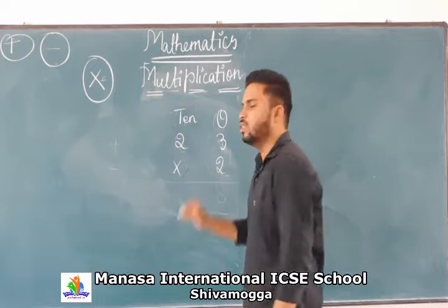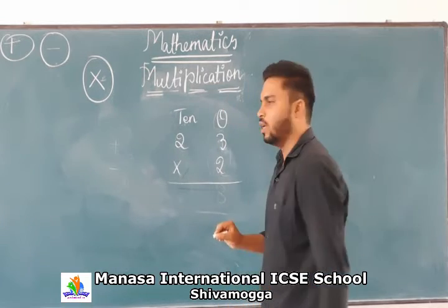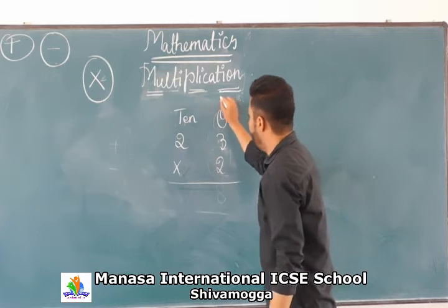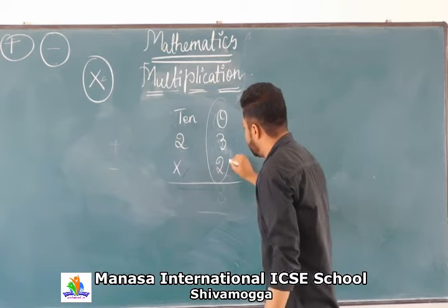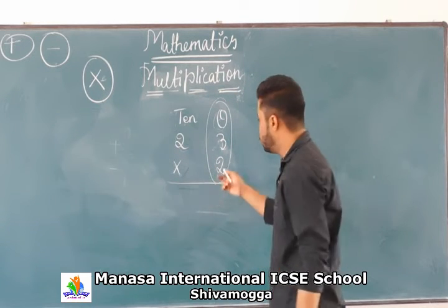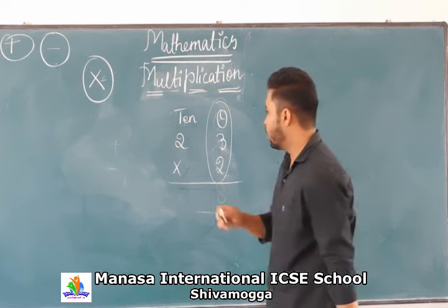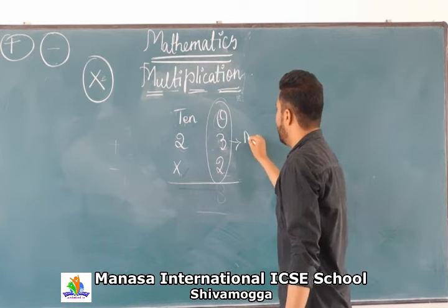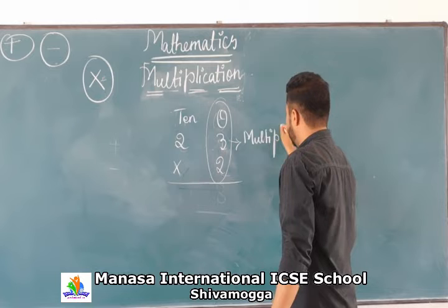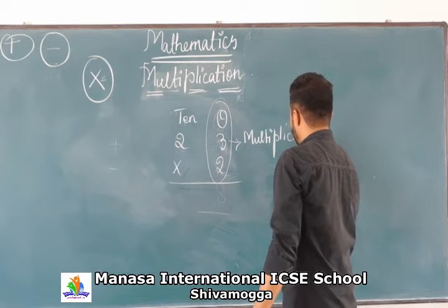We will just multiply with two. We will start multiplying with the one's place. This two will multiply with the one's place. This is called the multiplicand.